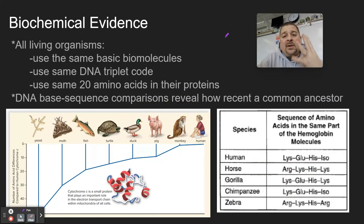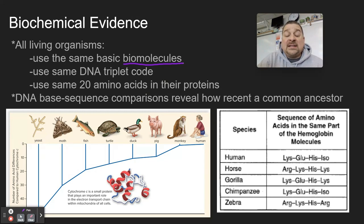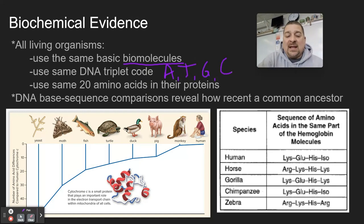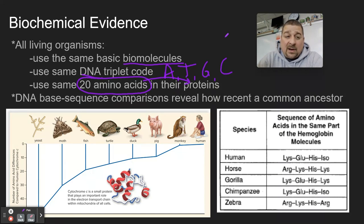Finally, number four is biochemical evidence. All living organisms use the same basic biomolecules — DNA, RNA, glucose, sugars, lipids, proteins — all very similar across organisms of any complexity. They use the same triplet codon with adenines, thymines, guanines, and cytosines, and the same 20 amino acids to build their proteins. This unity of life is evident in biochemical evidence.